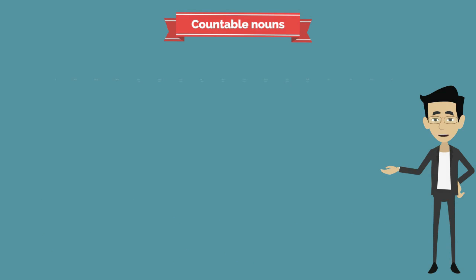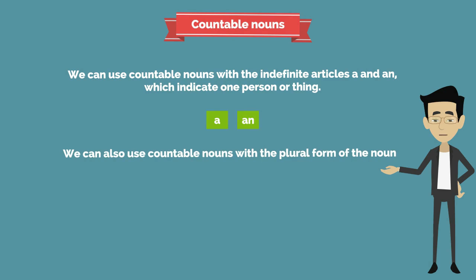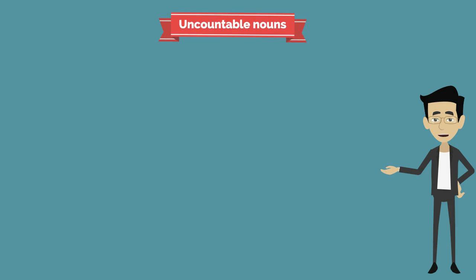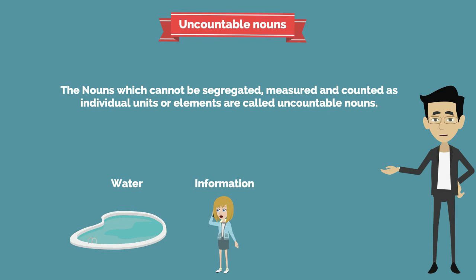Uses of countable nouns: we can use countable nouns with the indefinite articles 'a' and 'an', which indicate one person or thing. We can also use countable nouns in their plural form. The second type, uncountable nouns, are nouns which cannot be segregated, measured, and counted as individual units. Examples: water, information, money, and so on.